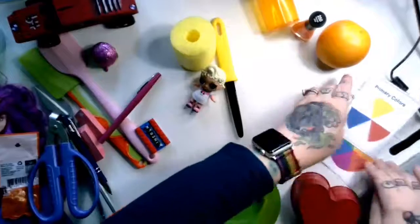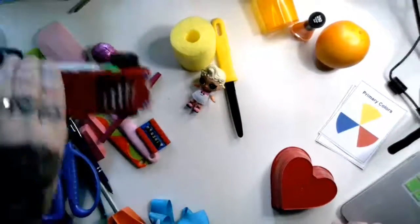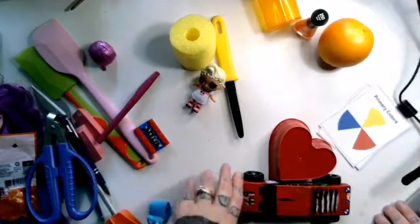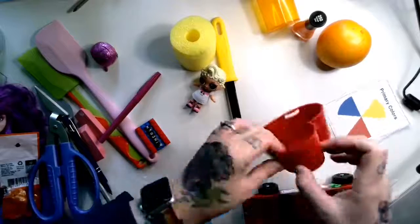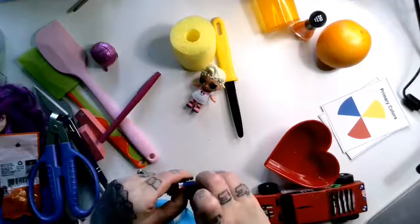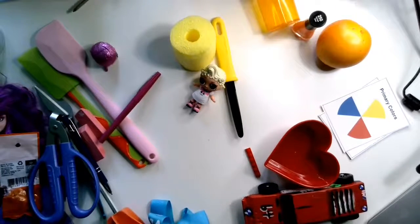So I'm going to find all my things that are red and I'm going to put them down here in this corner. So I got a toy car, a heart-shaped bowl. I got some red Legos here that I'll put on here.